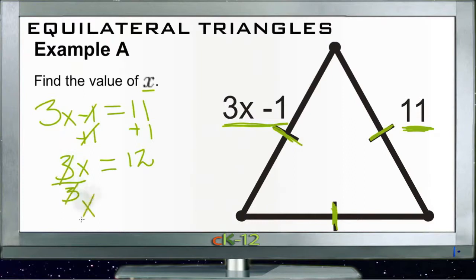And then we divide both sides by 3. 3 divided by 3 is 1, so 1x equals 12 divided by 3 which is 4. So the value of x is 4 units.